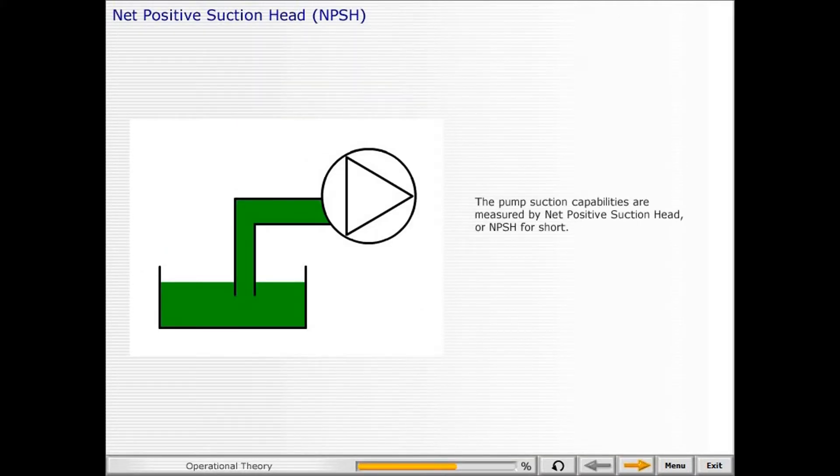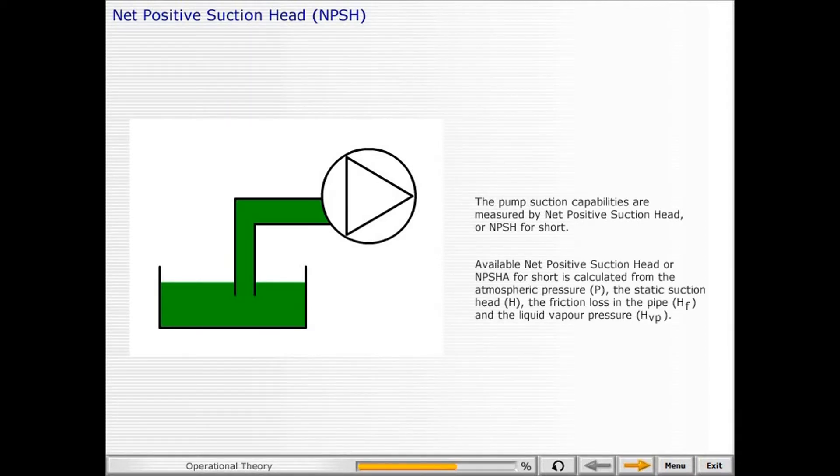The pump section capabilities are measured by net positive suction head, or NPSH for short. Available net positive suction head, or NPSHA for short, is calculated from the atmospheric pressure, the static suction head, the friction loss in the pipe, and the liquid vapor pressure.